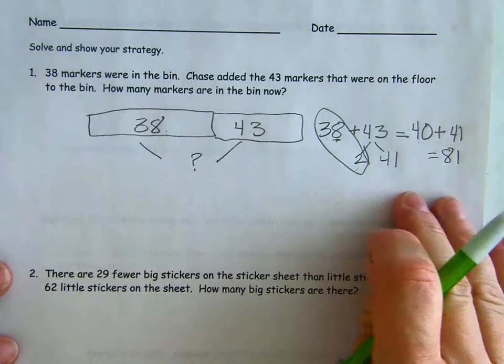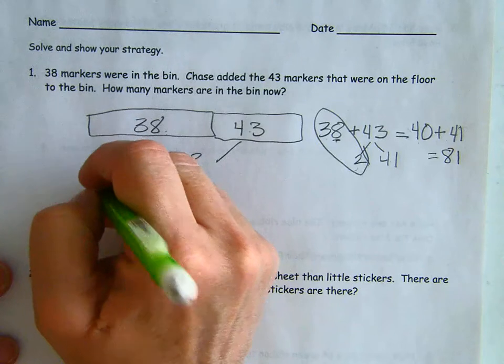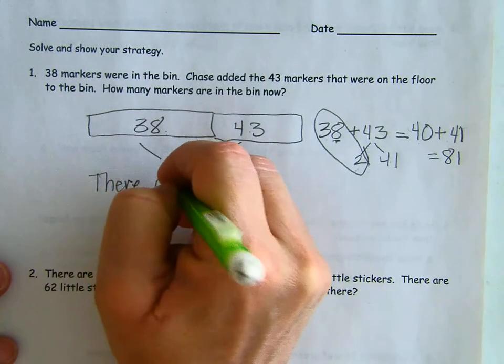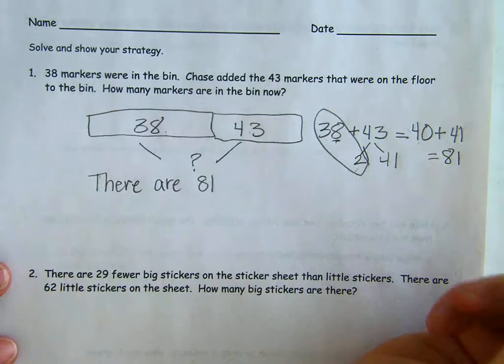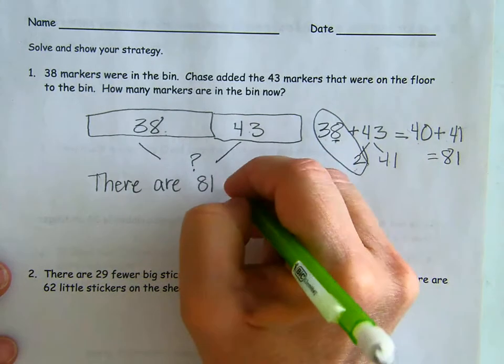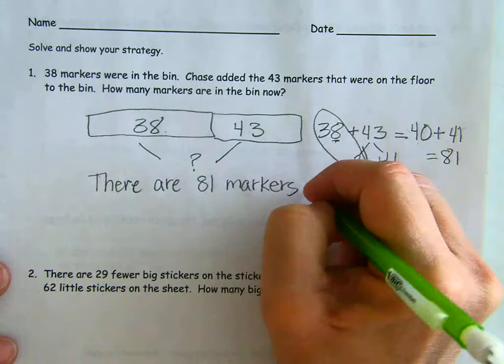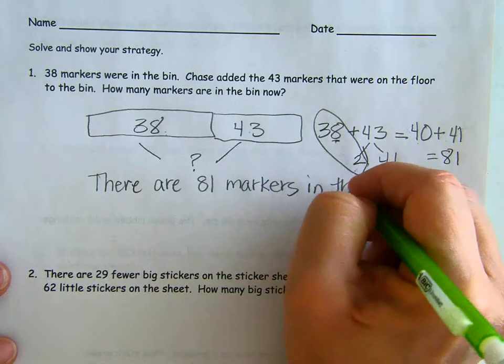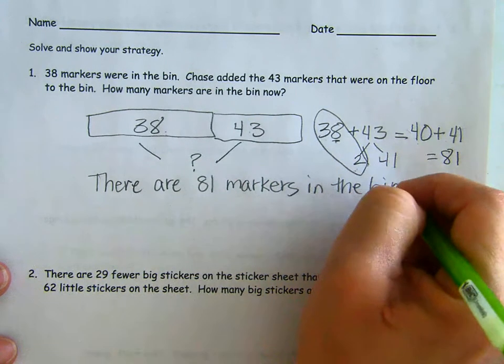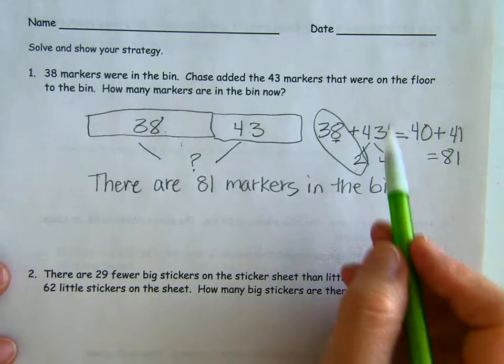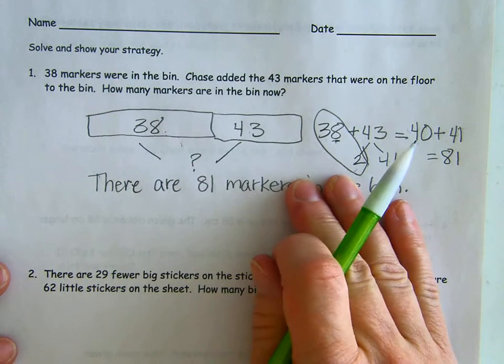We need to then write that statement: There are 81 markers in the bin. So we draw, we solve, and then we write our statement out.